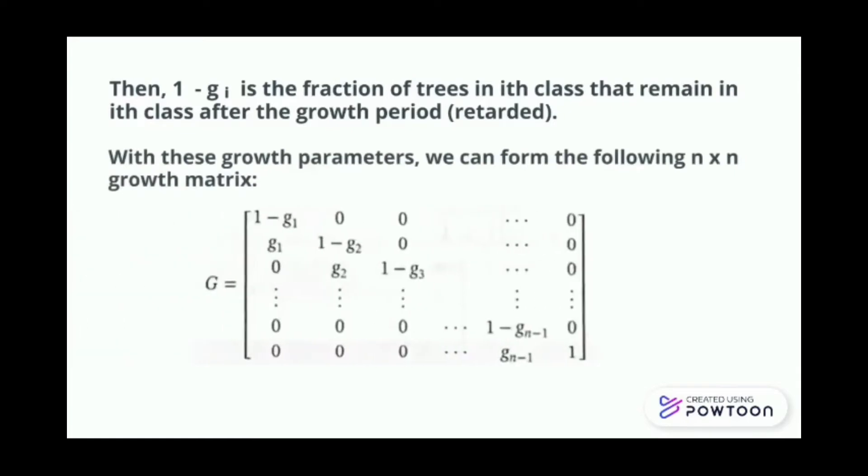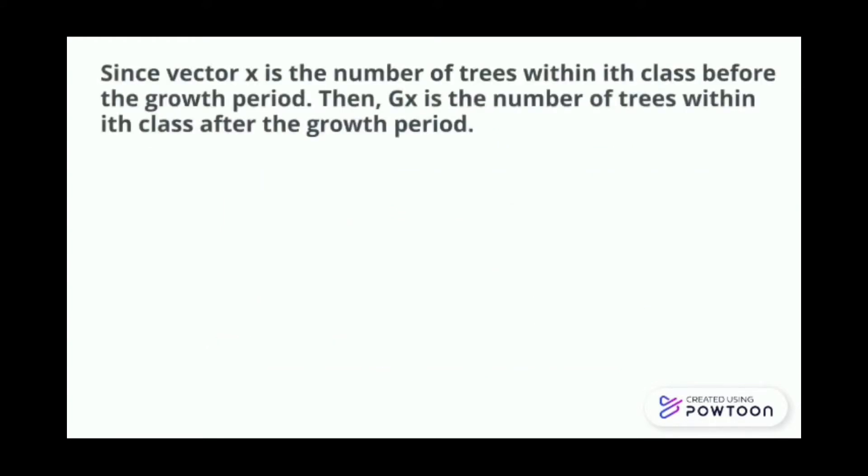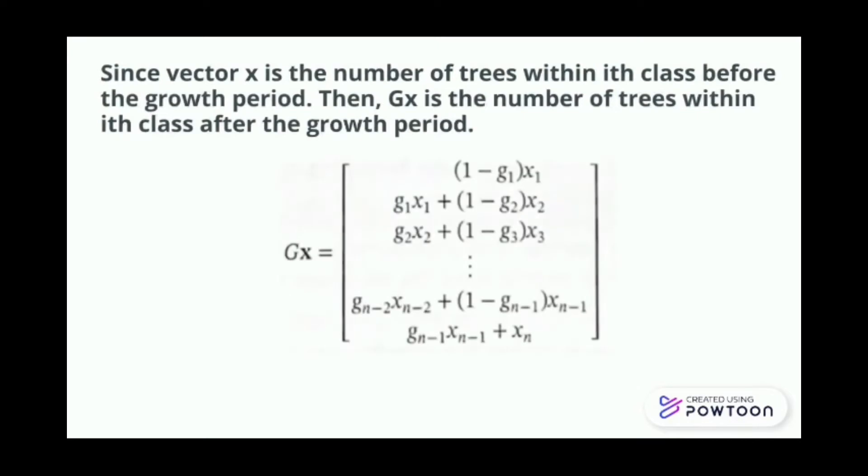With these growth parameters, we can form the following n times n growth matrix. We label this as equation 2. Since vector x is the number of trees within i class before the growth period, then Gx is the number of trees within i class after the growth period. We label this as equation 3.